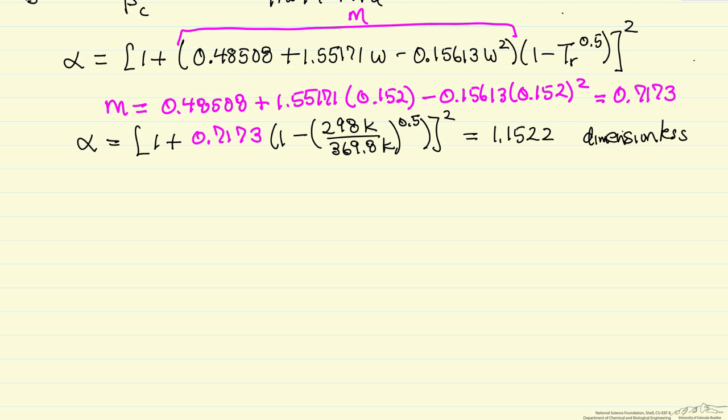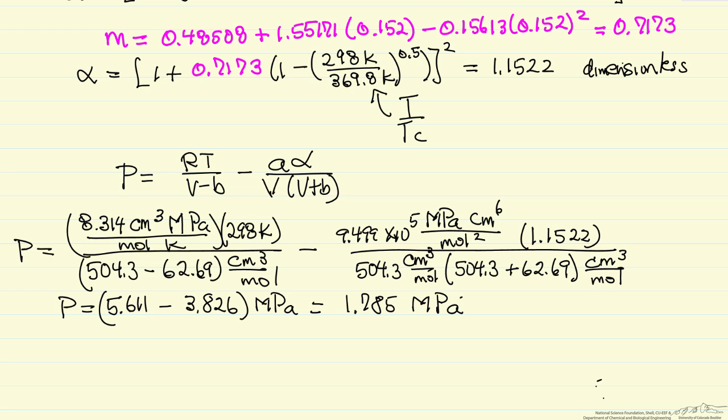So notice that here we substitute reduced temperature, which is the temperature divided by the critical temperature. Now that we have all the parameters, we can substitute into the SRK equation of state. So the units check, and we end up with units of megapascals, and so we would conclude the pressure in the tank for propane is 1.78 megapascals, or 1.8 megapascals, but we have to be careful.